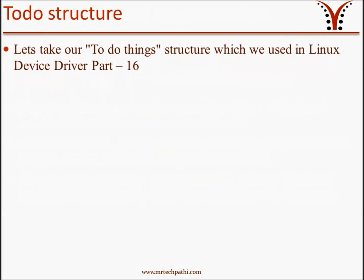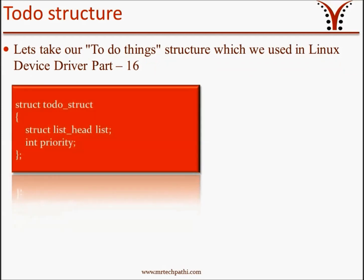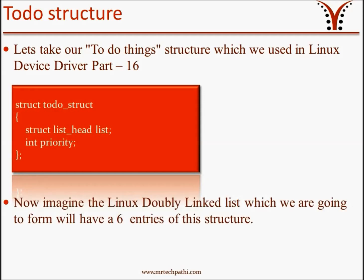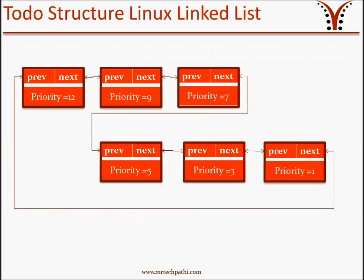Let's take our to-do structure which we used in Linux Device Driver part 16. This structure contains a list of type list_head structure and a variable priority. I have not considered any other driver-specific data for the time being. Now imagine the Linux doubly linked list we are going to form will have six entries of the structure. I have drawn a Linux circular doubly linked list of the to-do list structure which contains these six entries. It also holds the list which carries previous and next pointers, allowing us to manipulate the entry in the linked list as per our needs.